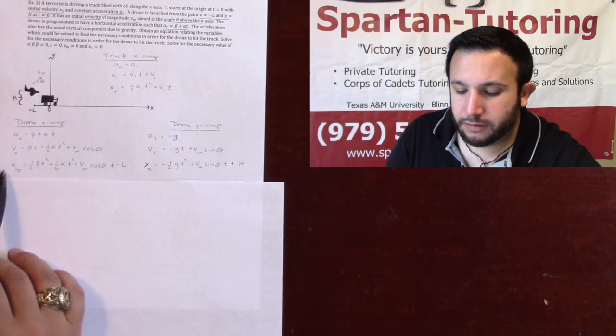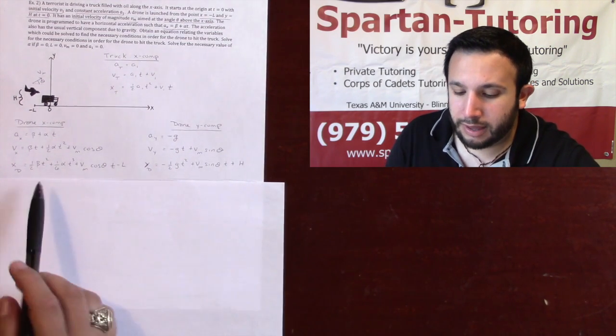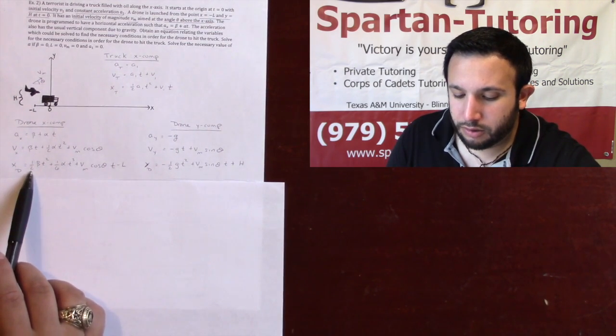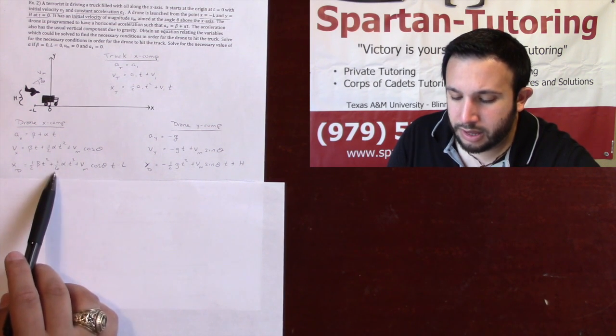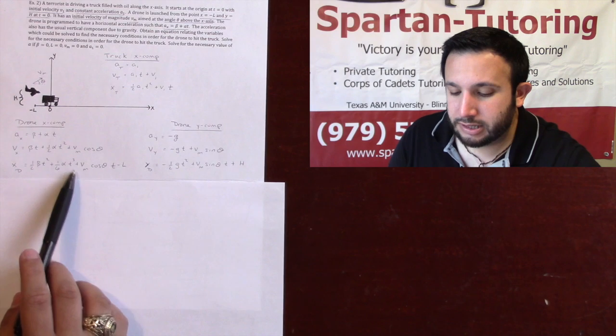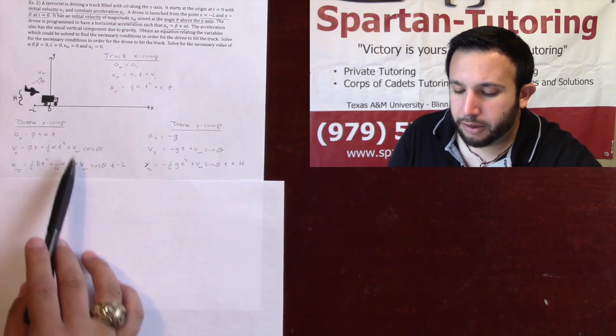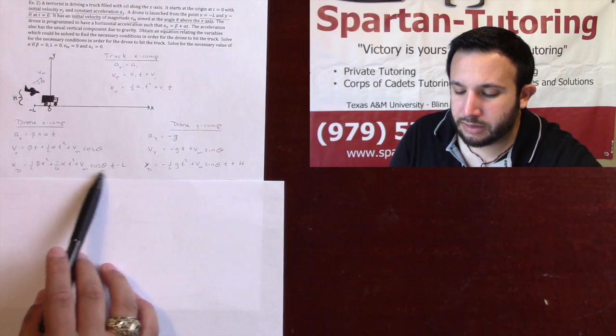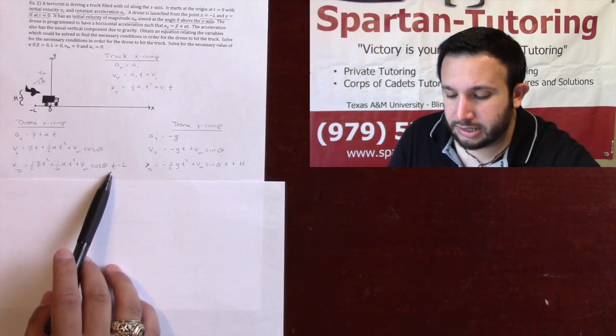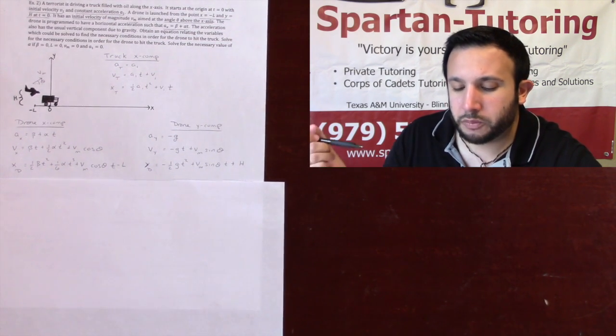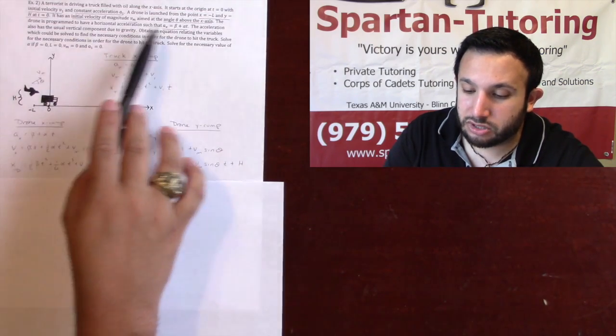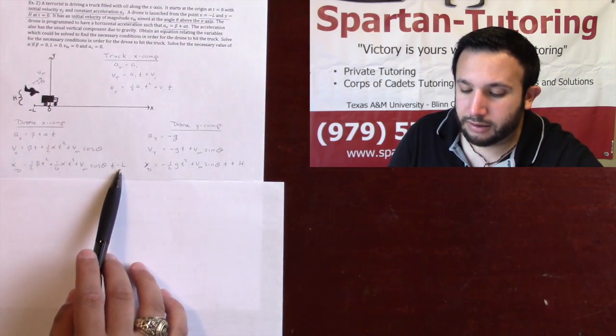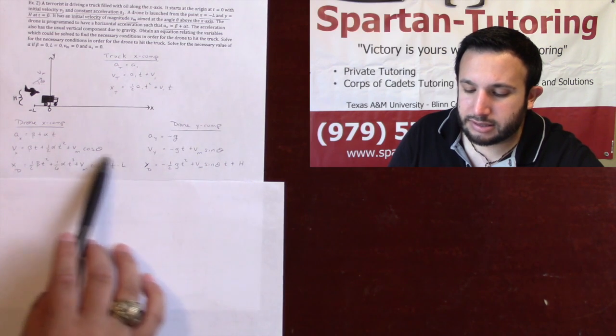Now that I have my velocity, you find position by integrating that. The integral of beta, one half beta t squared. The integral of this one right here is one sixth alpha t cubed. Remember, dividing the three on bottom. Plus, this is a constant, so it's going to be that times t, the vm cosine theta times t. And then you want your initial position in the x. And initially, it said it started at x equals negative l. So there is the x of the drone.